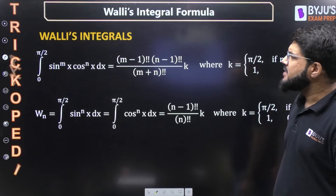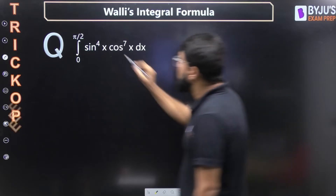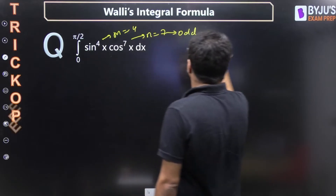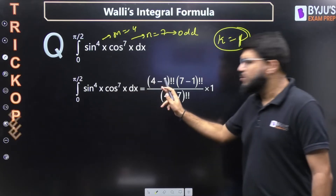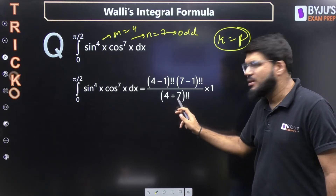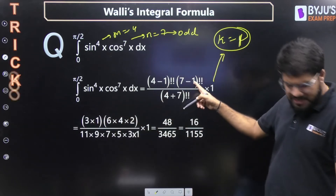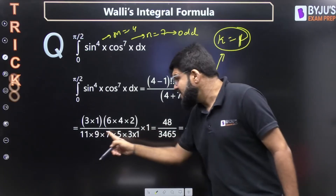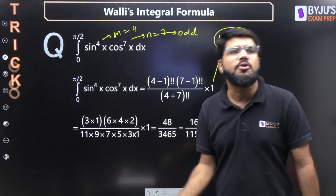Let's apply this to a question: integral from 0 to π/2 of sin⁴(x) cos⁷(x) dx. Here m = 4 and n = 7. One of the powers is odd, so k = 1. Applying the formula: (m−1)!! × (n−1)!! / (m+n)!! × k = 3!! × 6!! / 11!! × 1. Now 3!! = 3×1, 6!! = 6×4×2, and 11!! = 11×9×7×5×3×1. You can carry out the calculations from here.